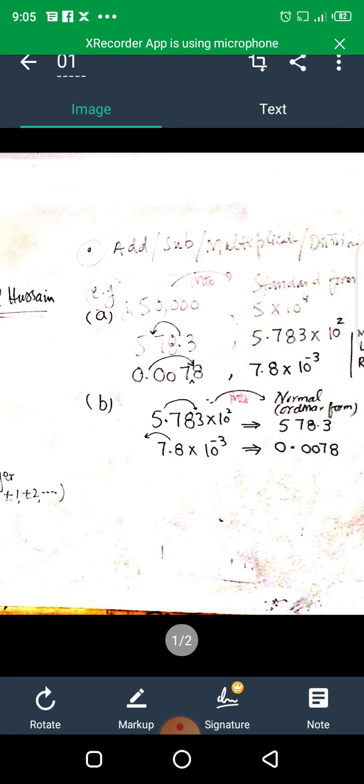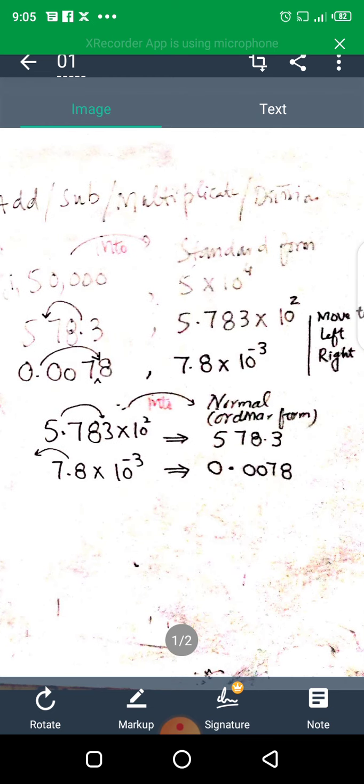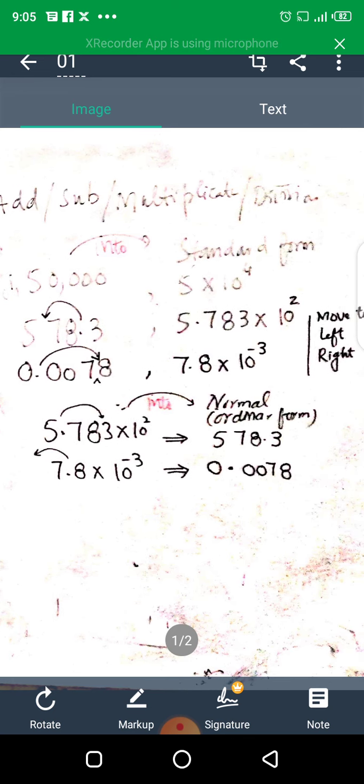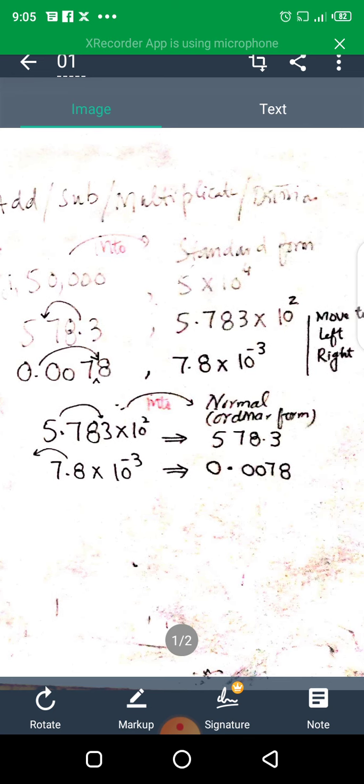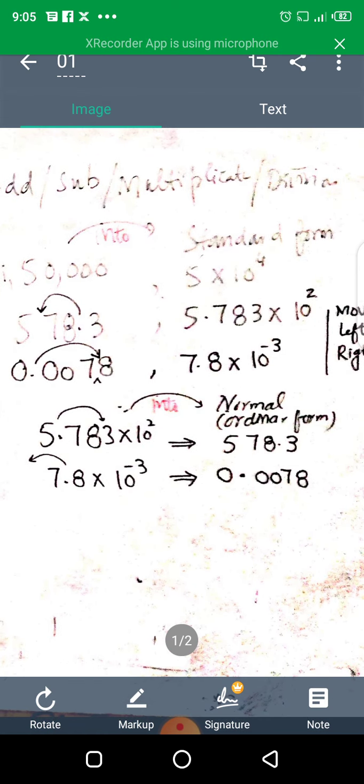Now some examples are here. For example, 50,000, and you have to convert this ordinary form into standard form, so that will be 5 multiply by 10 raised to power 4.